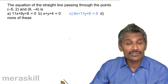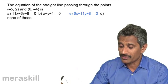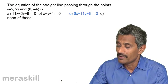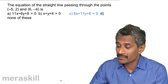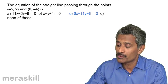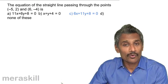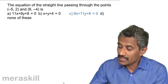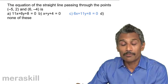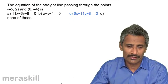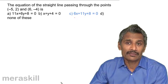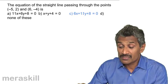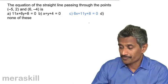An important note: if you forget the form, you can verify by substitution. Putting x equals minus 5 and y equals 2 gives minus 30 plus 22 plus 8 equals 0. Putting x equals 6 and y equals minus 4 gives 36 minus 44 plus 8 equals 0. This confirms both points satisfy the equation. You can also use substitution to choose from options.